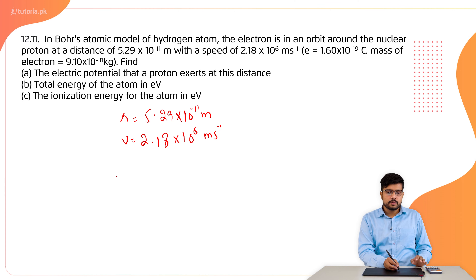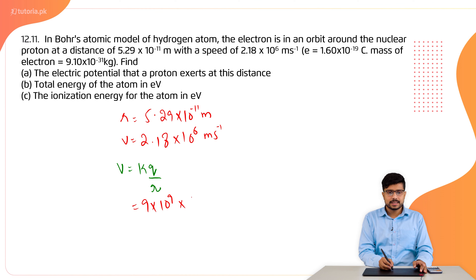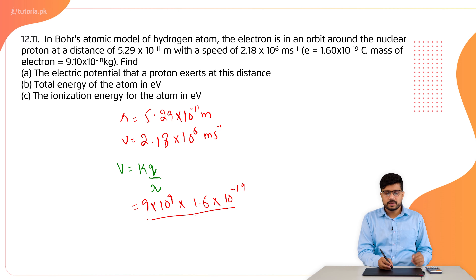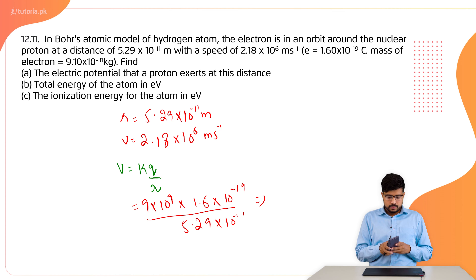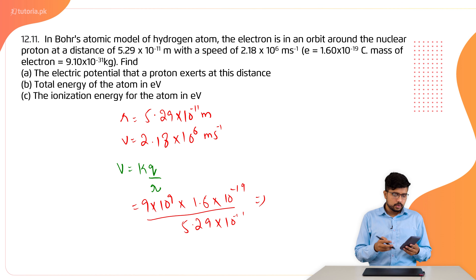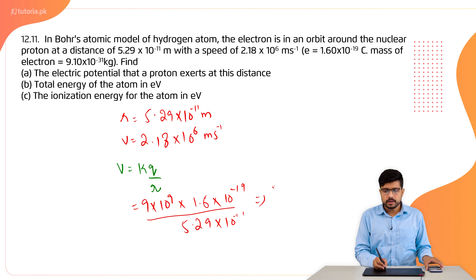First of all, let's find out the electric potential, which is capital V. The formula is kq over r. We have k = 9 × 10⁹, charge q = 1.6 × 10⁻¹⁹, and r = 5.29 × 10⁻¹¹ meter. Solving this, my answer is 27.22 V.